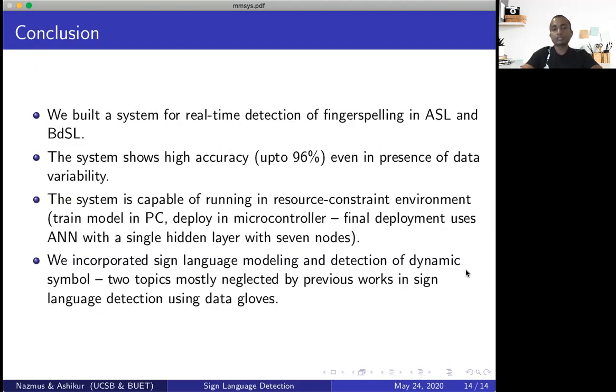So in conclusion, we built a system for real-time detection of fingerspelling in ASL and BDSL. The system shows high accuracy even in presence of data variability. As we've mentioned, we've collected data from different users with different hand sizes in different sessions. So the system is capable of running in resource-constrained environment. And we've used a pretty simple methodology where we train the model in our personal computer. However, we can deploy only the model in resource-constrained environments like microcontrollers. And finally, we incorporated sign language modeling and detection of dynamic symbols. These are two topics which have not really been discussed in previous works.